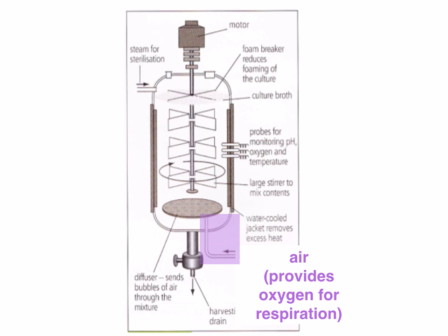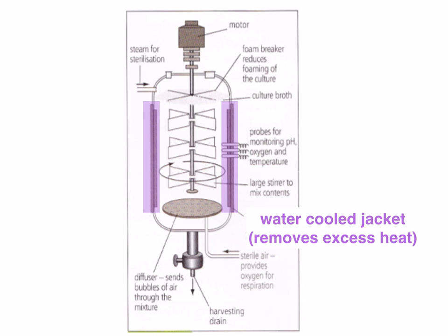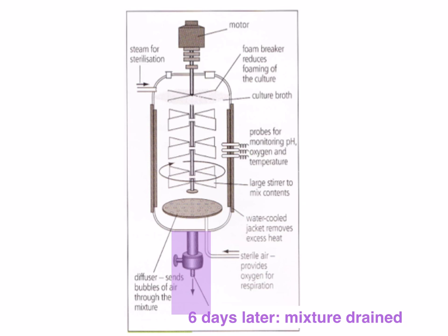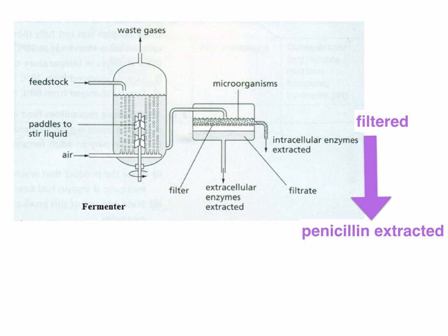At the bottom of the fermenter, there is an air supply, which provides oxygen for aerobic respiration of the fungus. Surrounding the fermenter is a water-cooled jacket, which removes any excess heat produced and keeps the fermenter at a constant temperature of about 24 degrees Celsius. After about six days, the mixture is drained. The fungus has made penicillin, and the mixture is filtered so the penicillin can be extracted.